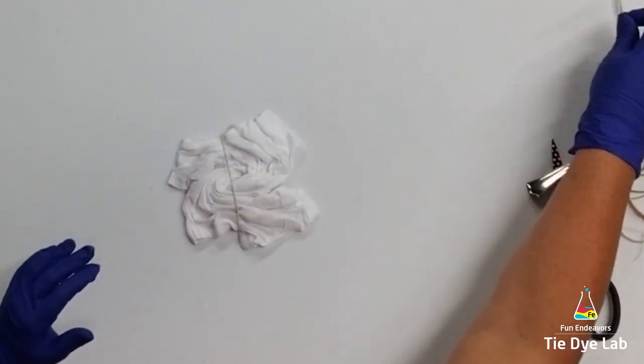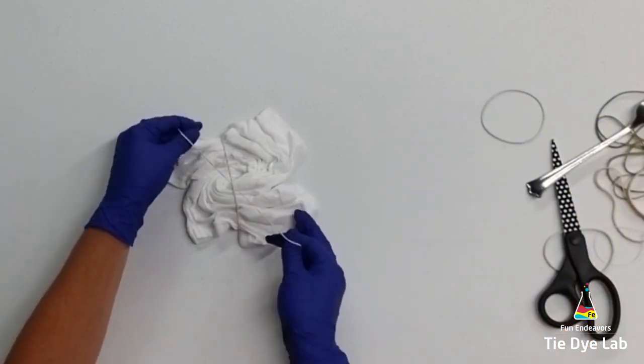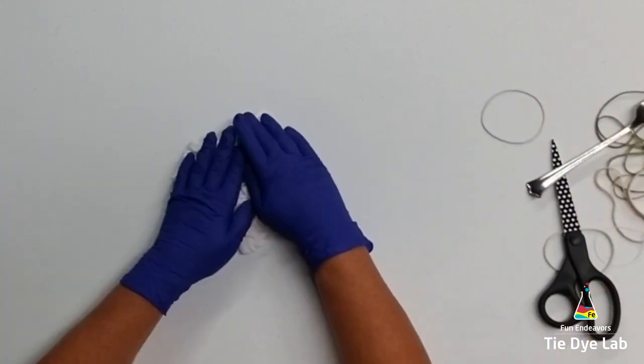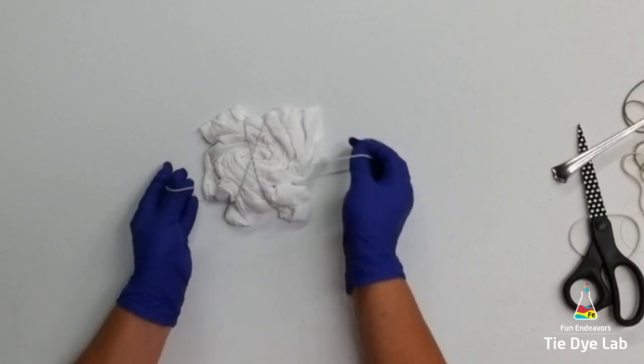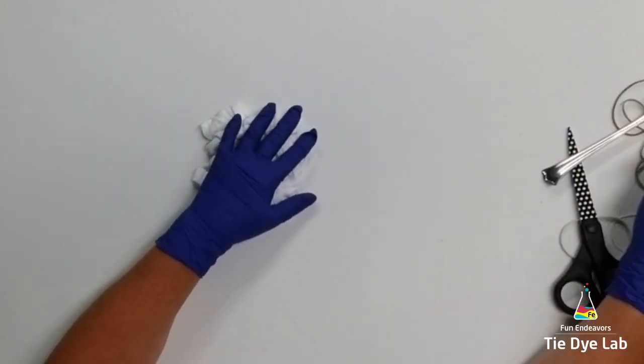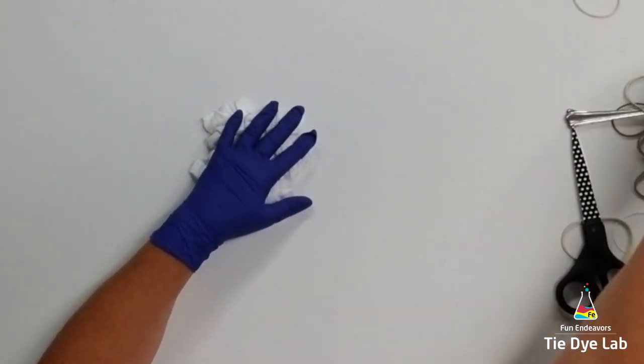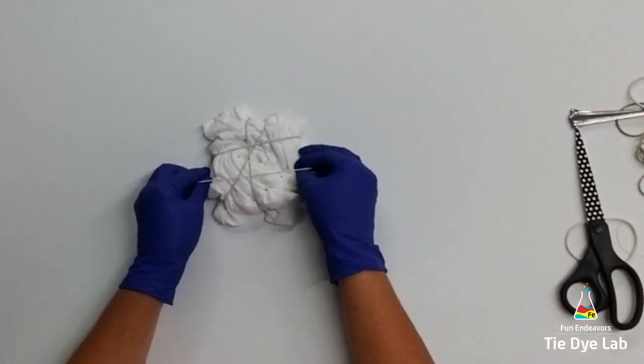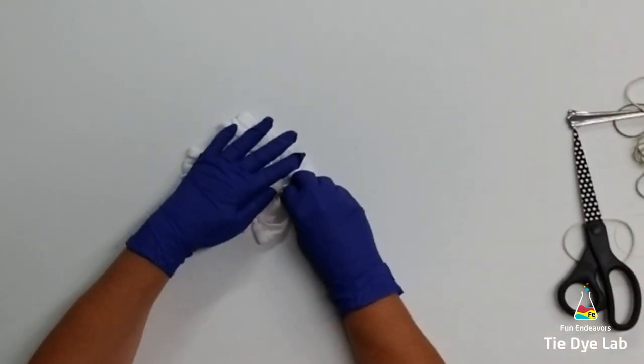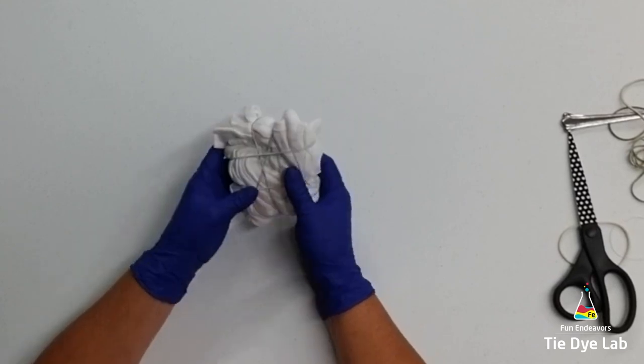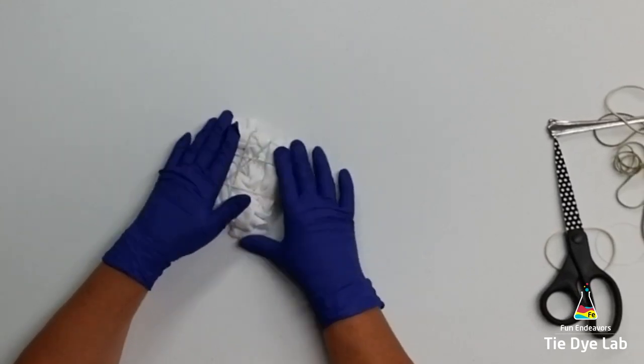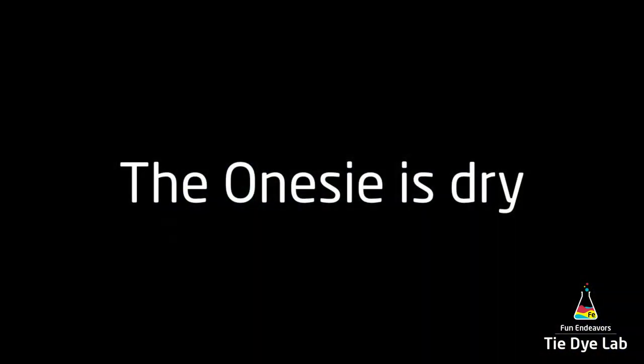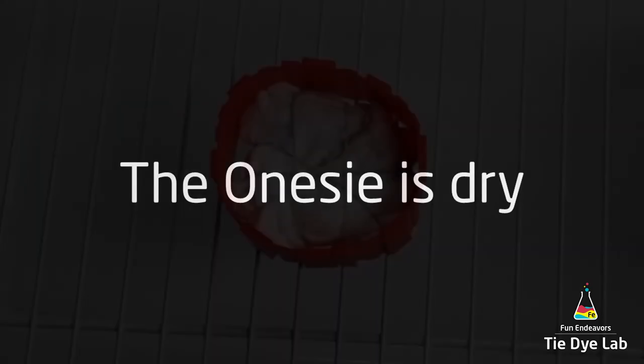Then I'm going to hold it in place with some rubber bands. Again, I put my onesie aside and I've let it dry out.